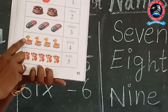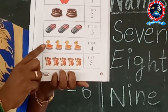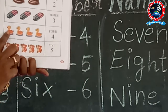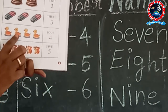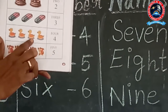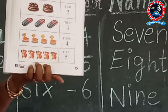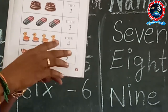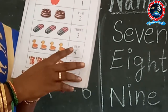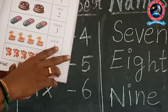Now you are going to count the little ducks. How many ducks are there? 1, 2, 3, 4 — so 4 ducks are there. Tell me the number name of 4: F-O-U-R, 4.